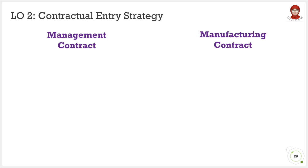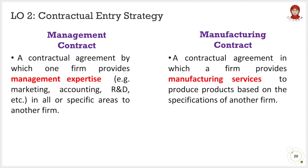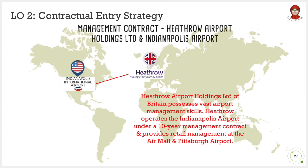Next, we move to management and manufacturing contracts. These two are quite similar, in which both involve providing expertise or services to another firm. Under a management contract, a firm will provide management expertise such as marketing, accounting, and others in all or specific areas to another firm. Whereas under a manufacturing contract, a firm will provide manufacturing services to produce a product based on the specification of another firm.